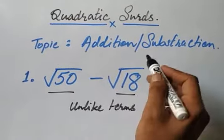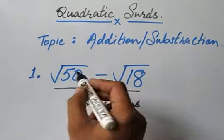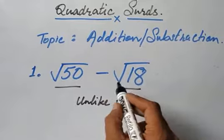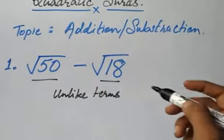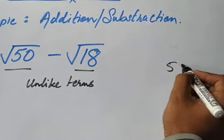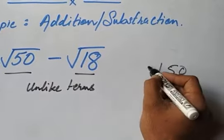Addition and subtraction is not possible for unlike terms, so we have to try to make them the same. For that we have to simplify it. First we will simplify 50. We will find the root of it.